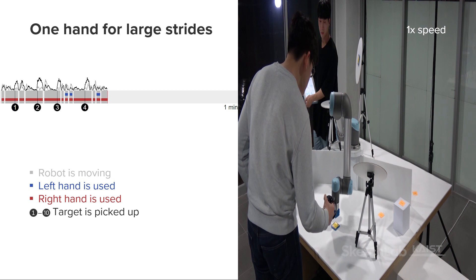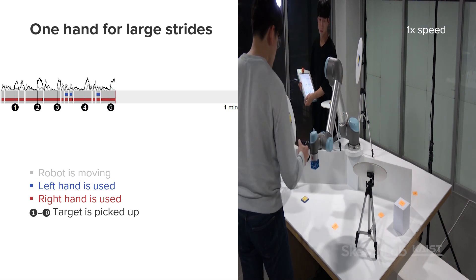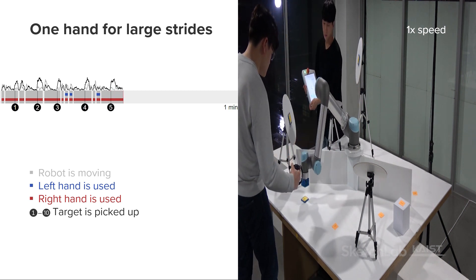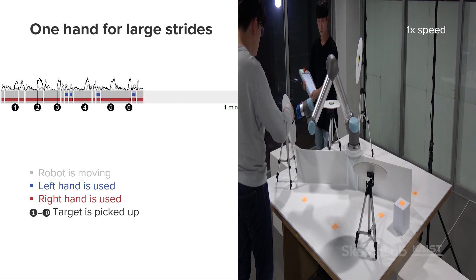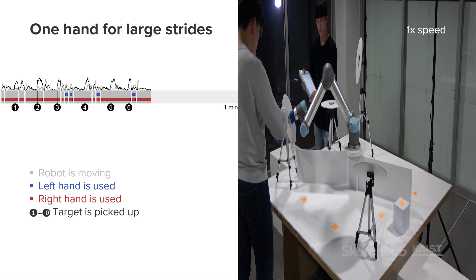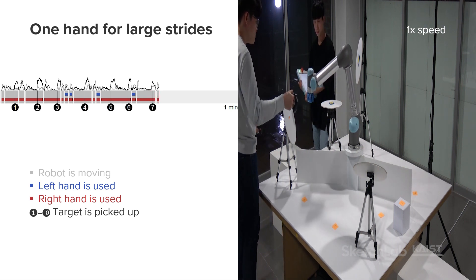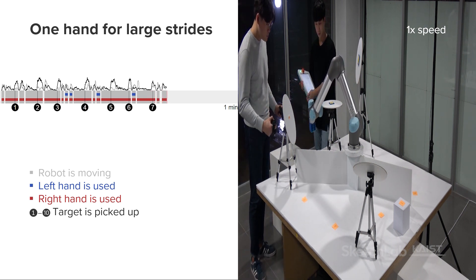First, many participants primarily used the dominant hand, rather than the non-dominant hand, to make large strides of movements and quickly go from one target to the next. Here, for this participant who was right-handed, it is shown as many red bars and relatively fewer blue bars.